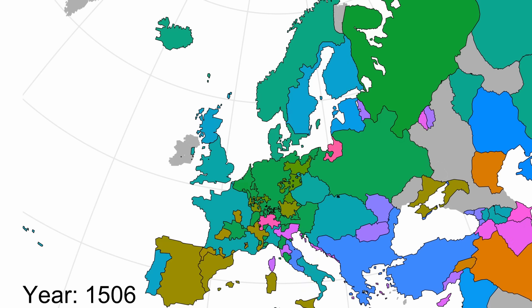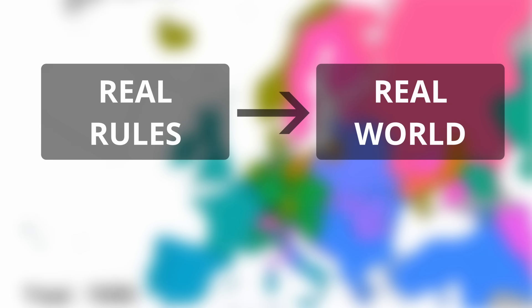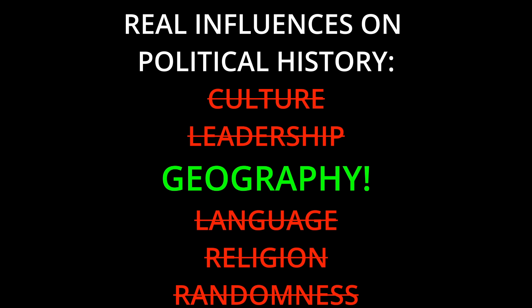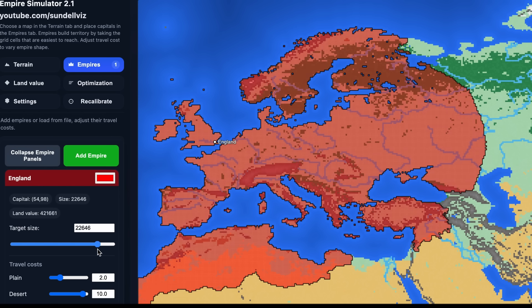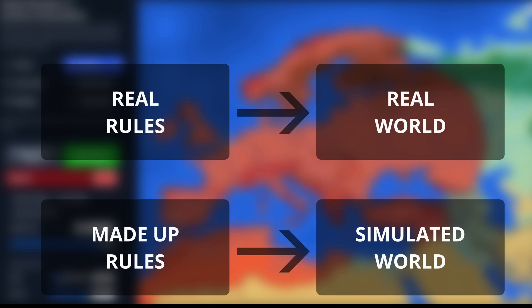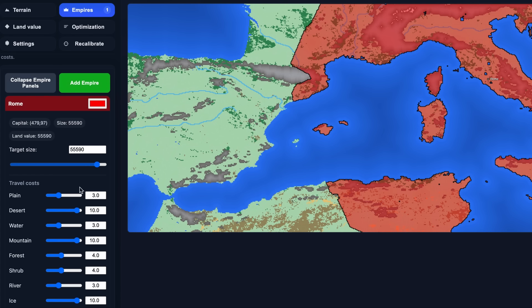What are we trying to do here? We can observe the real world but we can't directly see the rules that govern politics and history. What we can do is make up our own rules — simple rules, a model which we can understand. For instance, that state territory is determined by travel costs. We then simulate the world that follows from our made-up rules, and if the simulated world looks a lot like the real thing, this tells us that our model might be similar to the real rules of the world. If not, we have to adapt it. This is basic science.